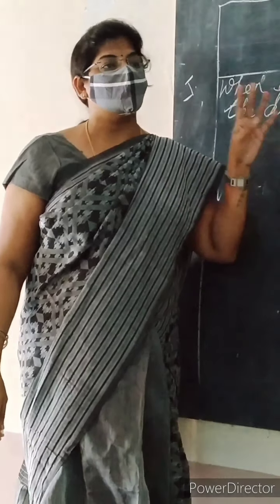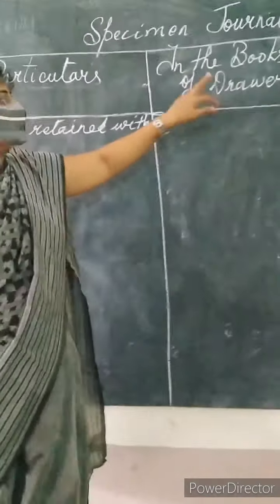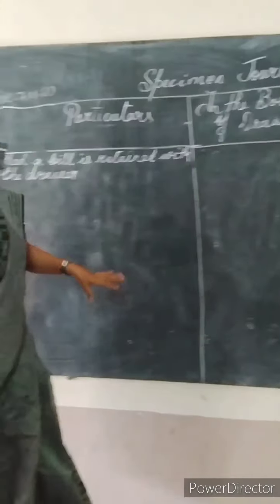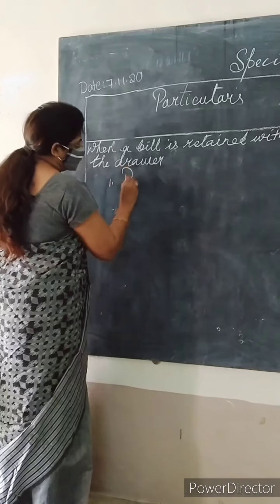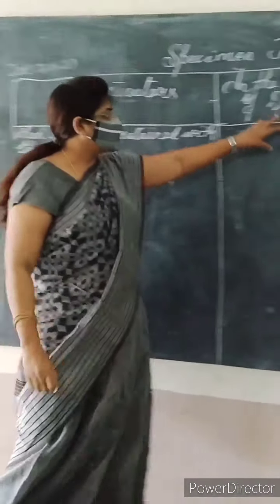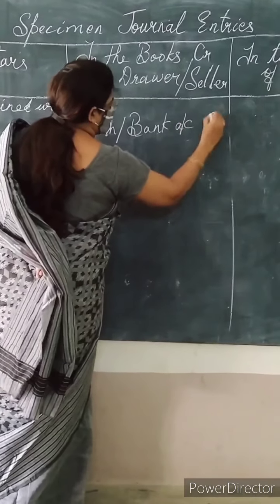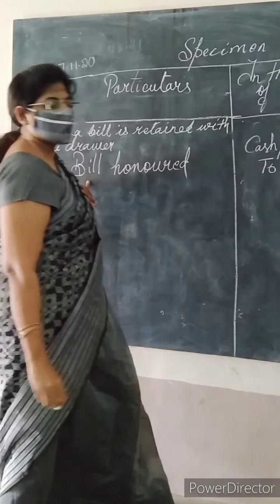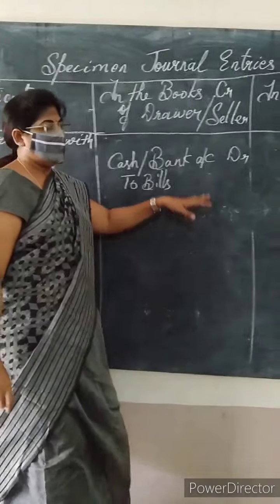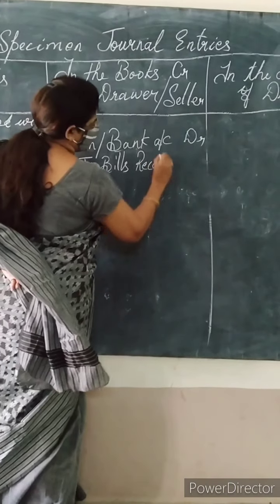In the starting of the class I said that under the 4 stages you will be learning how to write the journal entries. First one I said was that the bill is retained with the drawer — meaning payment will be done between these 2 parties only. There will be no third party such as bank, endorser and all. So here we will see: first, when a bill is honoured — honoured means paid. When a bill is paid, what is coming to the drawer? Cash. Towards bills receivable account. When writing bills under the heading of drawer, you write bills receivable; for the drawee it will be bills payable.